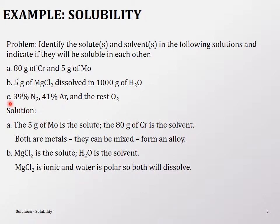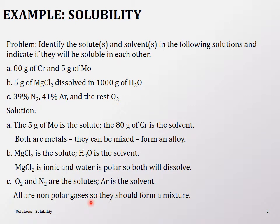The last example: 39% nitrogen, 41% argon, and the rest oxygen. Argon at 41% is the solvent; nitrogen and oxygen are the solutes. All three are gases, so they dissolve in each other without issue. All three are non-polar gases with similar properties, so they form a nice homogeneous solution.